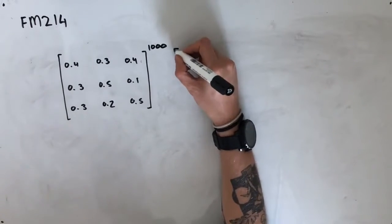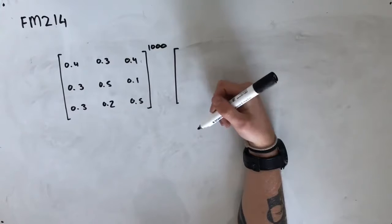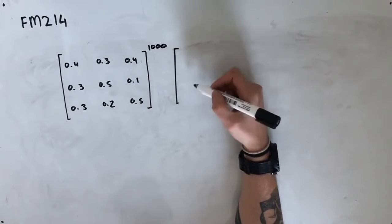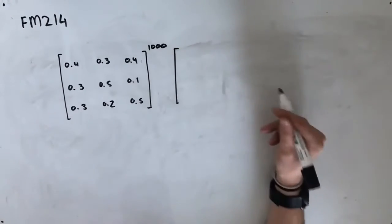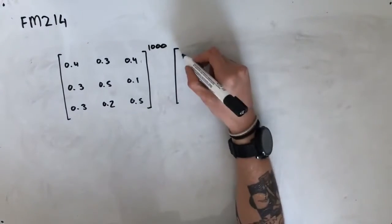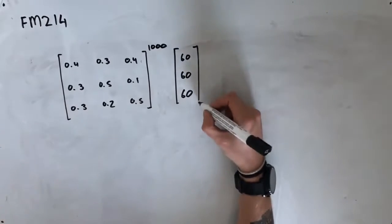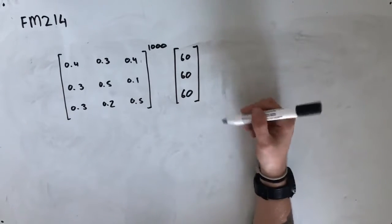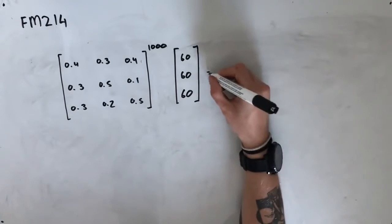We're also going to need an initial state matrix. The information given says there are 180 employees involved. It doesn't actually matter how you spread that 180 out to begin with, because you'll get the same answer when you reach the steady state. So I'm going to put 60, 60, 60 — dividing those 180 people into thirds — but you could put the full 180 into any one position and zero in the others, and you'd still get the same answer, as long as it adds up to 180 in total.